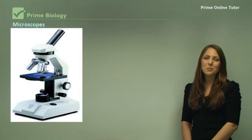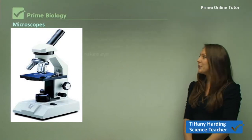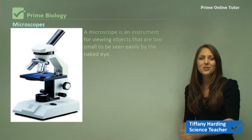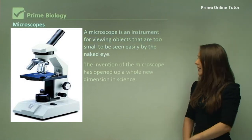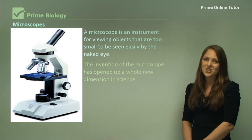In this topic, we're going to be learning about how to use microscopes, but it's good to understand where they came from. A microscope is an instrument or tool that helps you magnify an image that you cannot see with your naked eye. The invention of the microscope has opened up a whole new dimension in science.